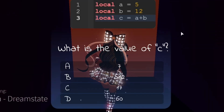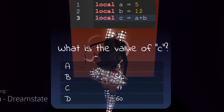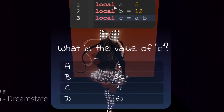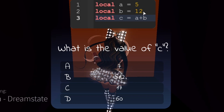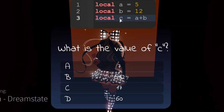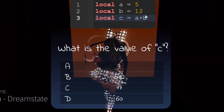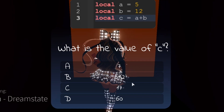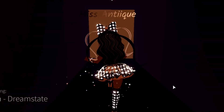The next question is: what is the value of C? You can see it says local A equals 5 and local B equals 12, so local C equals A plus B, which is 5 plus 12, which is 17. So we can press 17 right there.